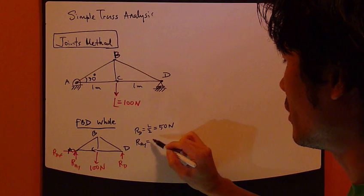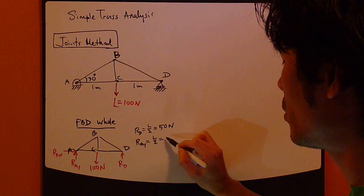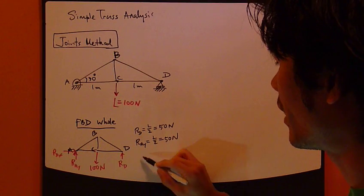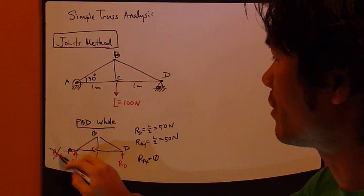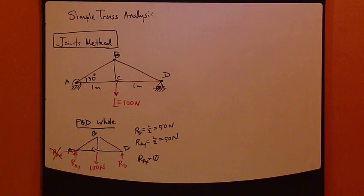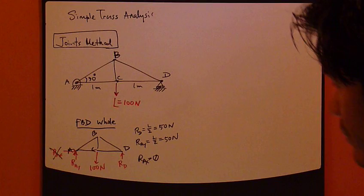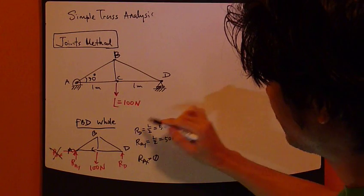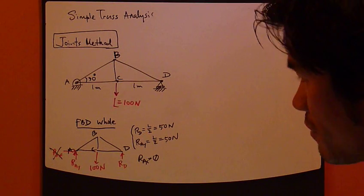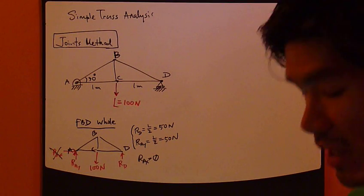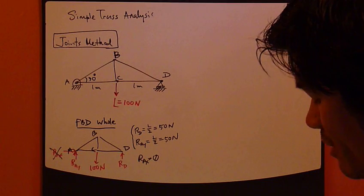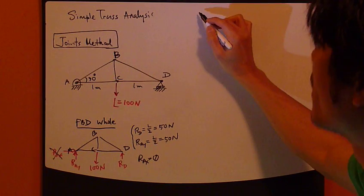RAY equals again one half the load, equals 50 Newton. And RAX equals zero, so that doesn't exist at all. So I've calculated these two reaction forces at these two end joints. Now I can begin my joint method analysis.